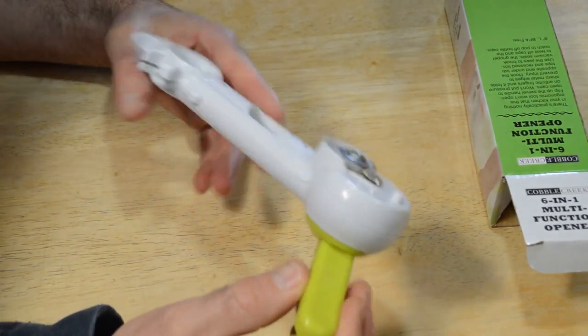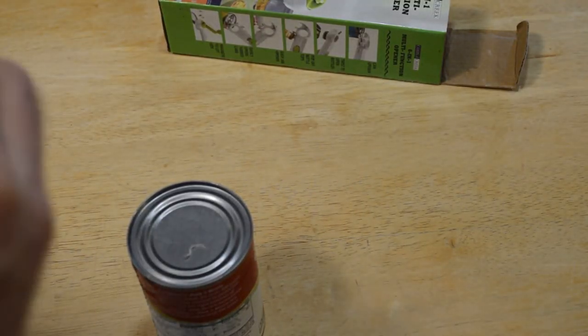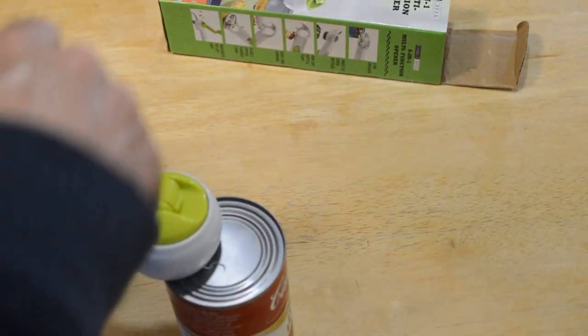First and foremost, let's test it out as a can opener and see if it works. Okay, so spin it around. There we go. Okay, locking in place, kind of clamps down on the lid.